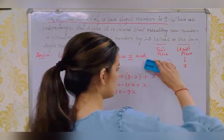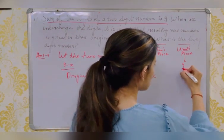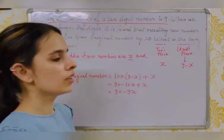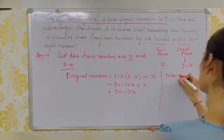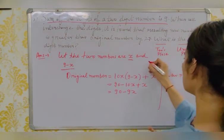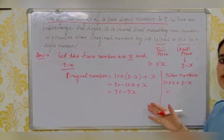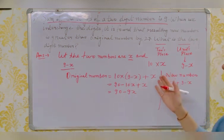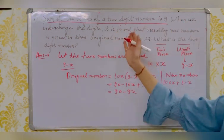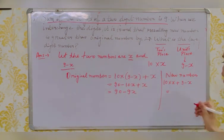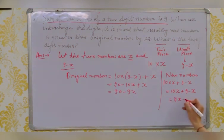Now interchange the digits: move (9 − x) to the units place and x to the tens place. Multiply x by 10 since it is now at the tens place. The new number = 10x + (9 − x) = 9x + 9. According to the problem, the new number is greater than the original by 27, so: (9x + 9) = (90 − 9x) + 27.